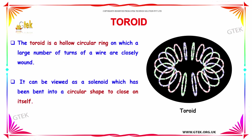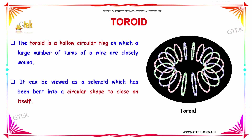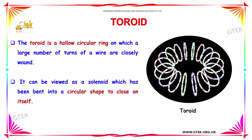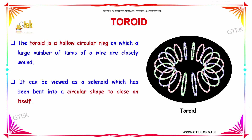Let's move on to the toroid. The toroid is a hollow circular ring on which a large number of turns of wire are closely wound. It can be viewed as a solenoid which has been bent into a circular shape to close on itself.